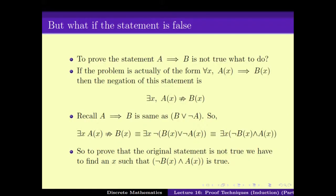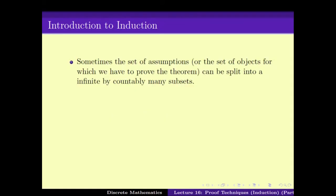We also saw how one can disprove a statement. Particularly if a statement is of the form 'for all x, A(x) implies B(x)', one can disprove it by demonstrating an x for which A(x) holds but B(x) doesn't hold. This is what we called proof by counterexample.